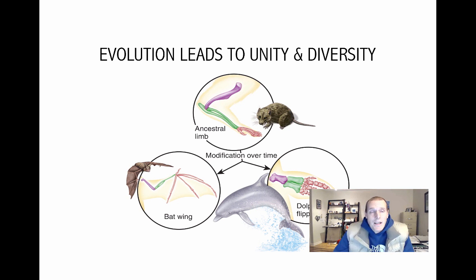All of this descent with modification over time leads to a huge amount of diversity on planet Earth. For example, we have a little shrew here with a limb, and there was probably an ancestor of the shrew who had an even more ancestral limb. But over time, evolution has given us diversification to the bat wing, or to, for example, the dolphin flipper.